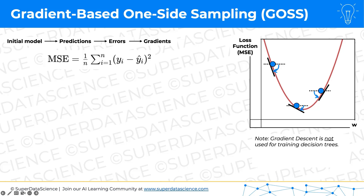Two things to point out: first of all, gradient descent is not used for training decision trees. It doesn't have to be used for all algorithms — in fact, it's very powerful for neural networks, and that's one of the ways it gains popularity, but it's not used for optimizing decision trees. We're just using it as a reminder of what a gradient is. In a nutshell, gradient is a collection of the loss function's derivatives with respect to its variables, showing the direction of the fastest increase.